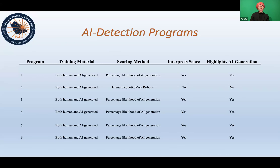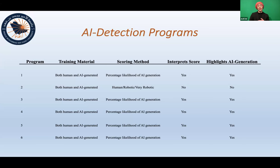The six AI detection programs were all extremely similar — all trained on human and AI-generated material. All but one reported the percentage likelihood of AI generation; the other reported 'human,' 'robotic,' or 'very robotic' as its output. For statistical purposes, these were rated as one, two, and three respectively, with 'very robotic' considered the highest. All but this one program also highlighted the text that mimicked AI generation.